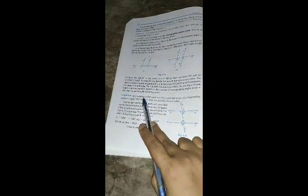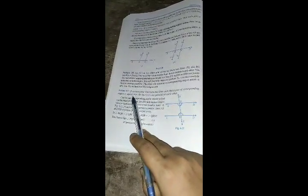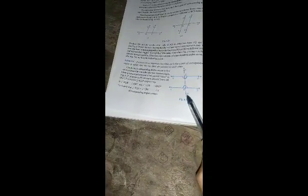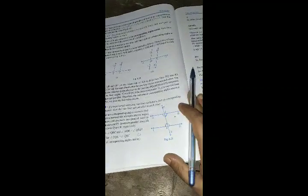Here's a key question: If a transversal intersects two lines such that a pair of corresponding angles is equal, then the two lines are parallel to each other. If corresponding angles are equal, the two lines are parallel.